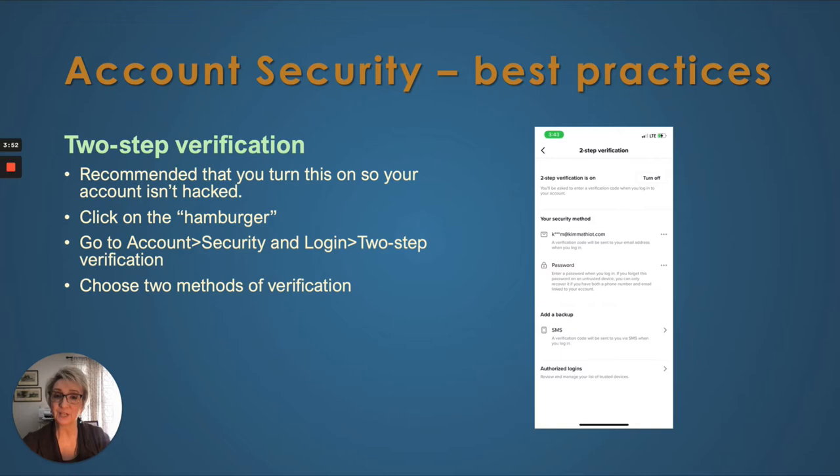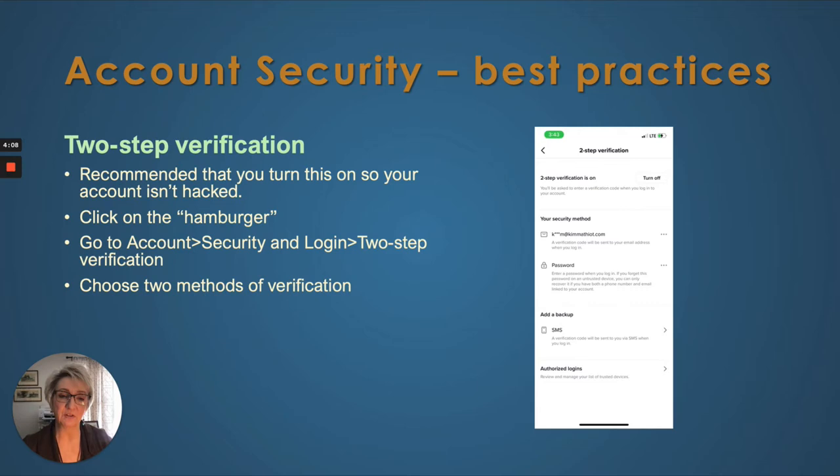The next thing you're going to want to do is turn on two-step verification. This will keep your account secure so it won't get hacked. Again, click on the hamburger in the upper right-hand corner, then go to account security and login and then two-step verification. You're going to have to supply two methods of verification, usually a phone number or an email address.